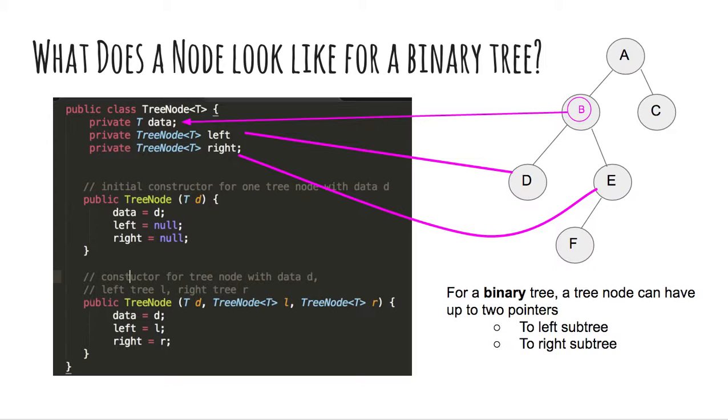There are two constructors to create this tree node object. One constructor initializes or sets the left and right pointers to null. And the second one sets its left and right pointers to the appropriate ones.